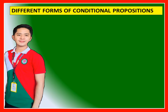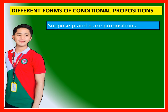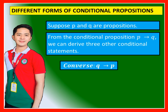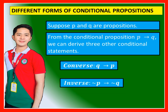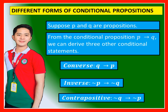Different forms of conditional propositions: Suppose P and Q are propositions. From the conditional proposition P then Q, we can derive three other conditional statements. The converse is Q then P. The inverse is not P then not Q. The contrapositive is not Q then not P.